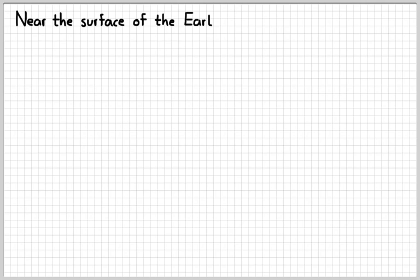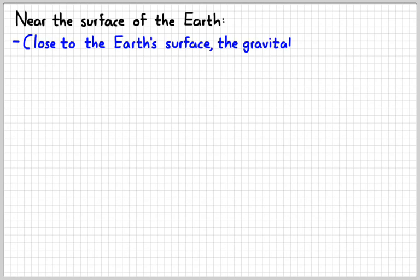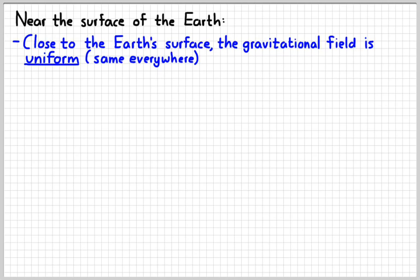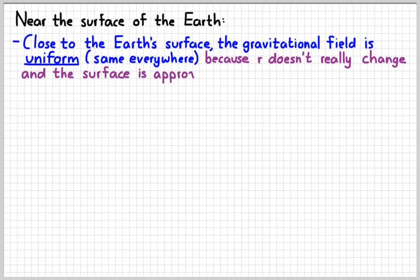Okay, so if we get close to the surface of the Earth, or any planet for that matter, the gravitational field is basically uniform. And what uniform means is the same everywhere. And that's true for two reasons. One, the r doesn't really change that much. Like, if we go up 100 feet, we're not really changing our distance from the center of the Earth by a whole lot. And the surface is approximately flat as you get close to the Earth's surface. So, from our perspective, like in a classroom, for example, the Earth kind of looks like that. And the gravitational field kind of looks like that. And it has a value of 9.8 N per kilogram pointing downward.